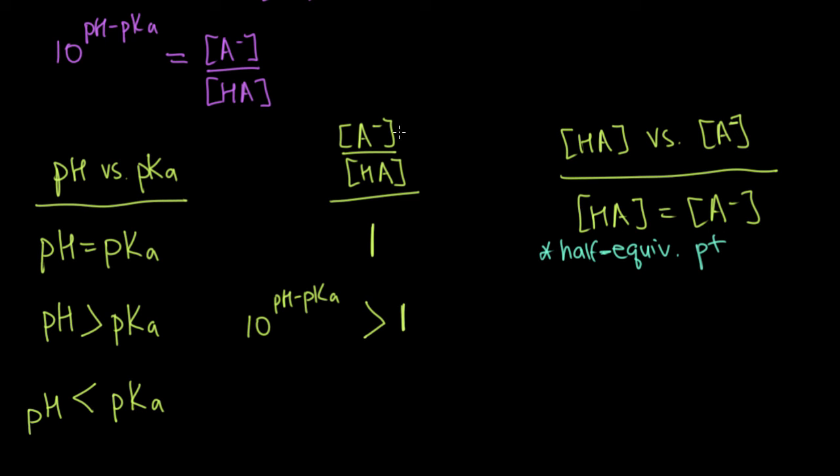So if our ratio A minus over HA is greater than one, that tells us that A minus, the numerator, is actually greater than the denominator, HA. So if you know the pH, and you know it's bigger than the pKa of your buffer, buffer's acid to be more specific, then you immediately know that you have more conjugate base around than your acid.